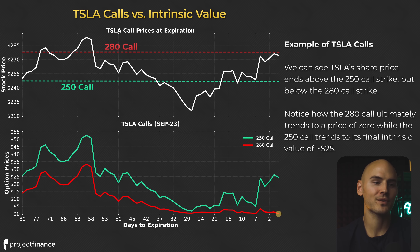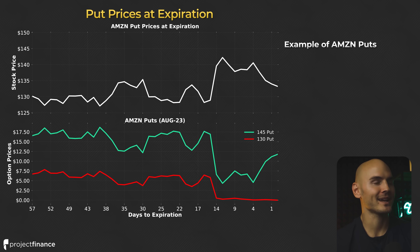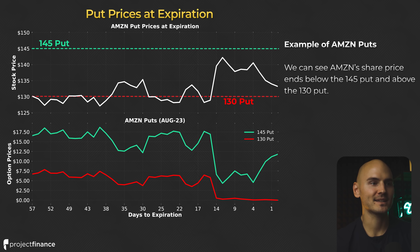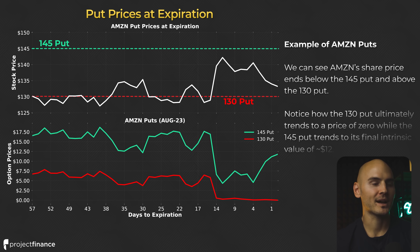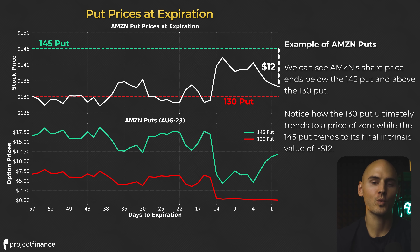In this chart, we're looking at Tesla with a $250 strike call and a $280 strike call. Tesla's share price ends above the $250 call strike but below the $280 call strike. Notice how the $280 call ultimately trends to a price of zero since it expires out of the money with no intrinsic value. But the $250 call trends to a final value of $25 — because at the time of expiration, the stock price is $25 above the call strike price, so the call option has $25 of intrinsic value. At expiration, all that will remain in an option's price is its intrinsic value. For puts, we're looking at Amazon with a $145 strike put and a $130 strike put. Amazon's share price ends below the $145 put but above the $130 put. The $130 put's price trends to zero since it has no intrinsic value at expiration, but the $145 put trends to its final intrinsic value of $12.